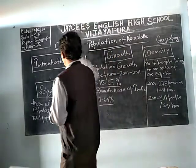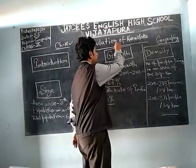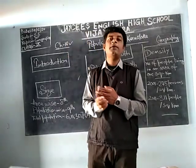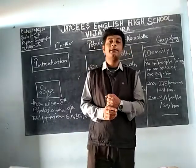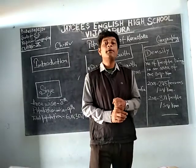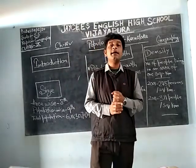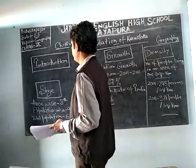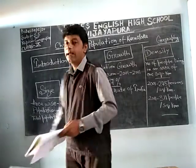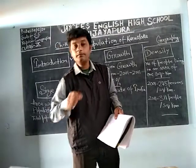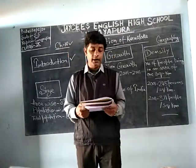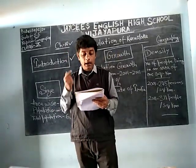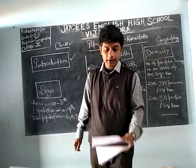Today we will go with the last chapter of Part 2 Geography, which is Chapter 10 — the Population of Karnataka. We will first go with the introduction to population, and then the population of Karnataka specifically. A group of people living in a particular geographical area is called population.